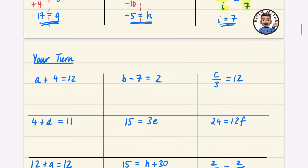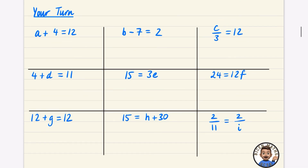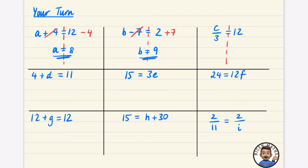Here are some questions for you to have a quick go at — pause the video and try them. The opposite of plus 4 is take away 4, so a equals 12 take away 4, which is 8. For b, the opposite of take away 7 is plus 7, so b equals 2 plus 7, which is 9. For c, the opposite of divide by 3 is multiply by 3, so c equals 36. For d, to get rid of the 4 at the front I take it away, leaving d equals 11 take away 4, which is 7.